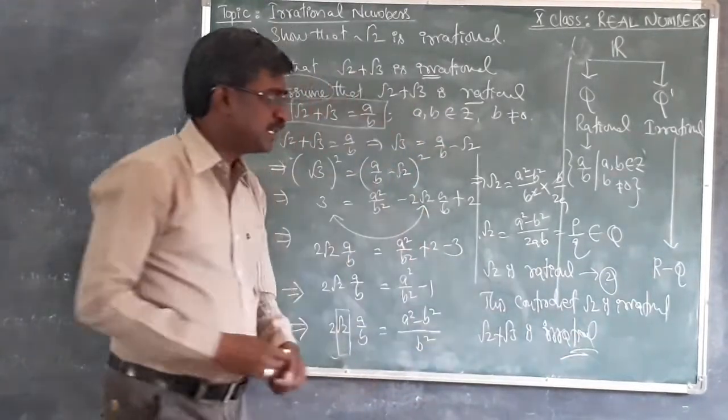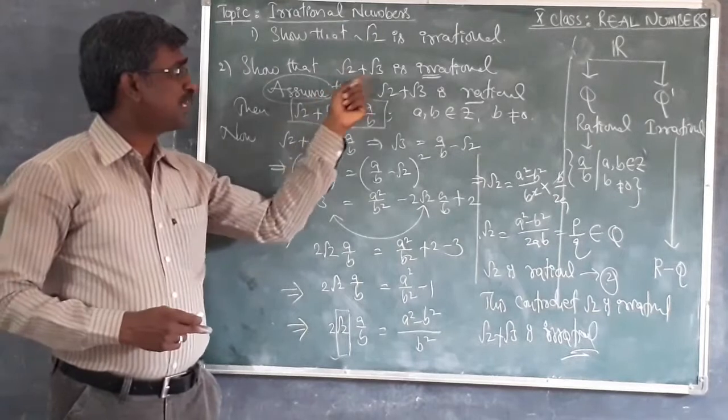So this is the way to prove root 2 plus root 3 is irrational.